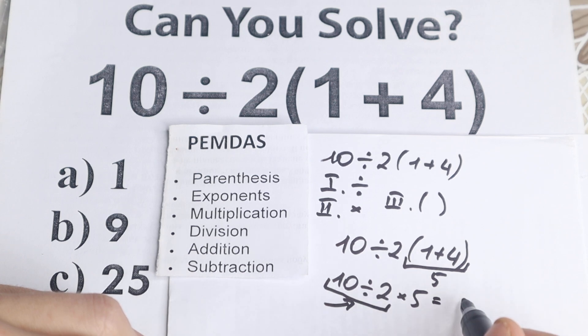So as a result 10 divided by 2 equal to 5 and 5 times 5 equal to 25. And this is our answer according to PEMDAS order.